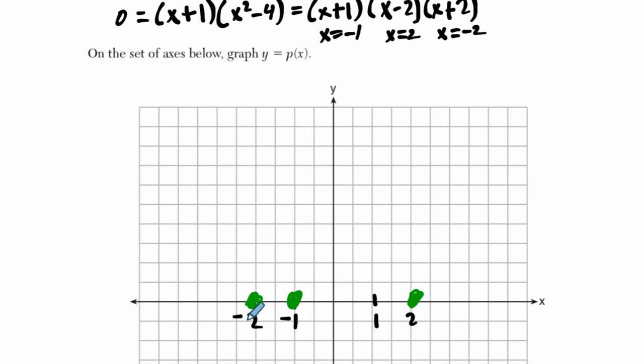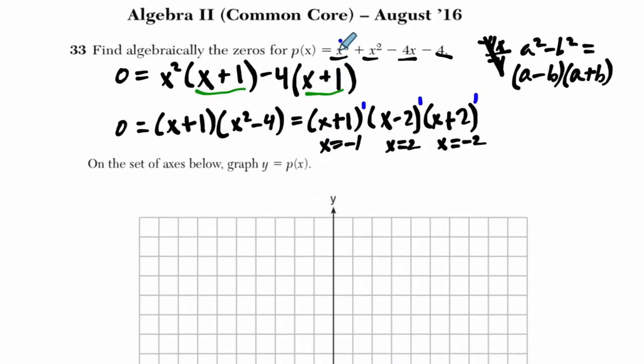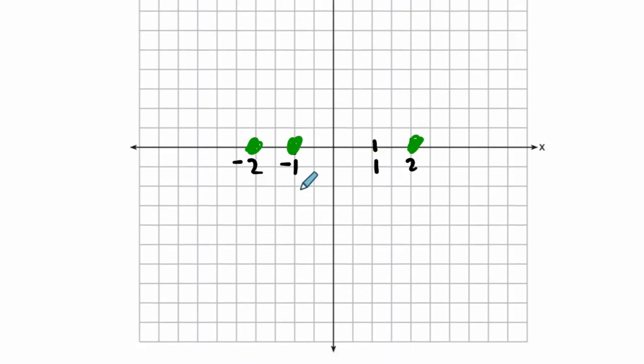But the next thing we should look at is the coefficient of the leading term. Leading term is the term with the highest power. So whether it's the front or back, it doesn't matter. If it's the highest power, it's the leading term. And the coefficient here is one. It's positive.